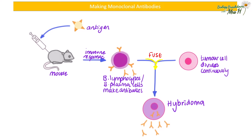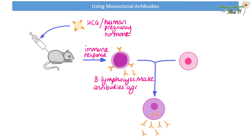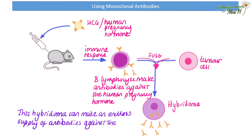So how are we going to get monoclonal antibodies used in pregnancy testing? The mouse will be injected with the human pregnancy hormone HCG, which is antigenic to the mouse — it shouldn't be in the mouse. So the mouse is going to have an immune response to this human pregnancy hormone, therefore producing lots of white blood cells. The lymphocytes will be extracted from the mouse and the lymphocytes making the correct antibodies against the human pregnancy hormone will be fused with tumour cells, therefore making hybridomas. Now we have lots of hybridomas that are going to make lots of antibodies against the human pregnancy hormone.